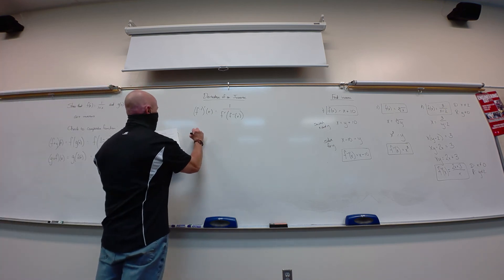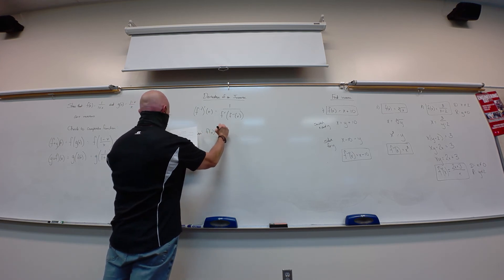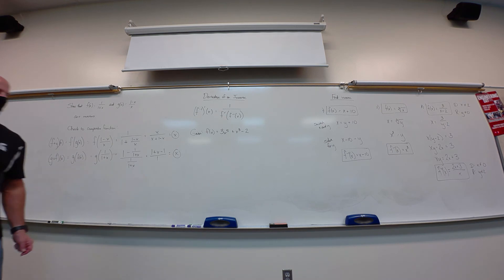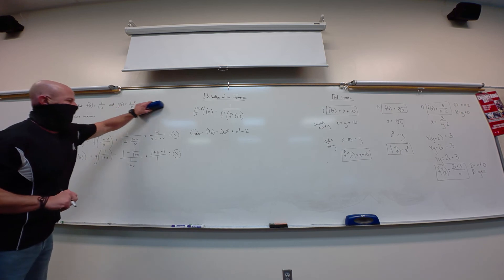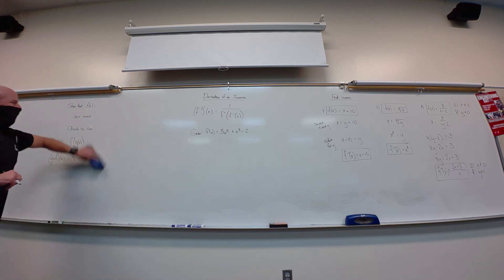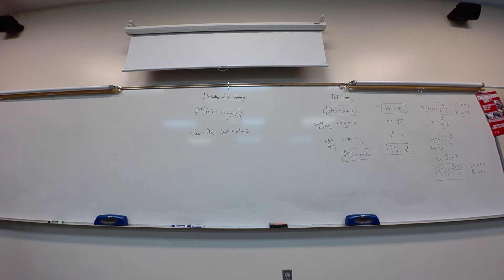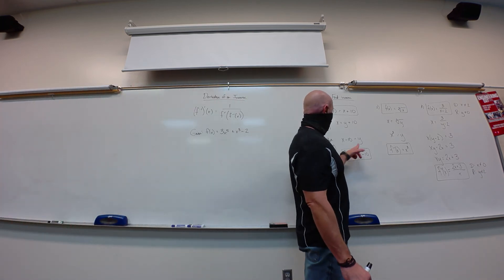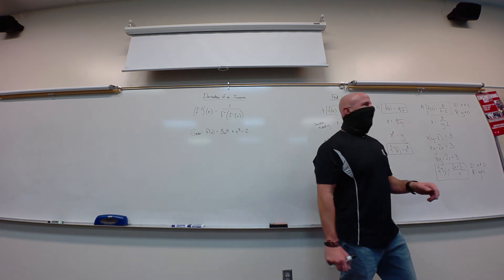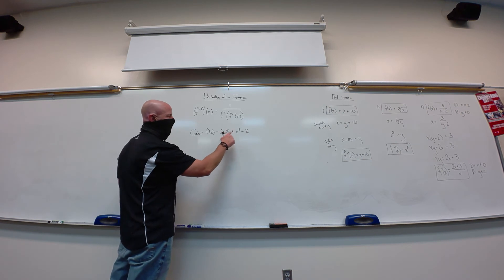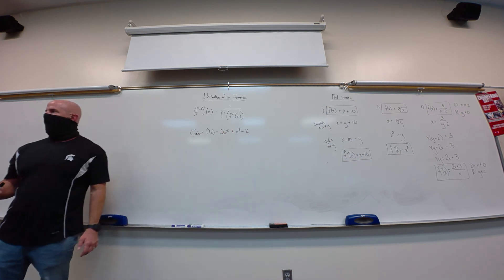Now given f of x equals 3x to the fifth plus x cubed minus 2, finding the derivative of the inverse is a problem. If you switch x and y, you'd have y to the fifth and y cubed — two different powers — and there is no way to solve that for y. This is where the formula becomes useful when finding the inverse algebraically is not possible.